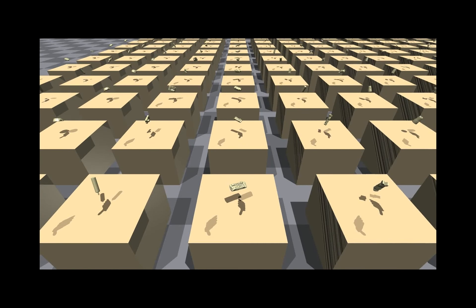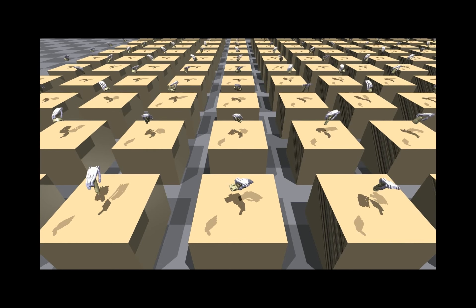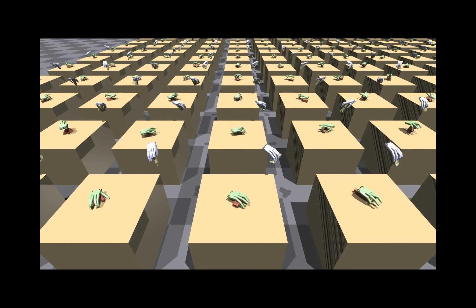We test our trained policy under two settings. First, we test on unseen objects in the seen categories. Second, we test on unseen objects in unseen categories.